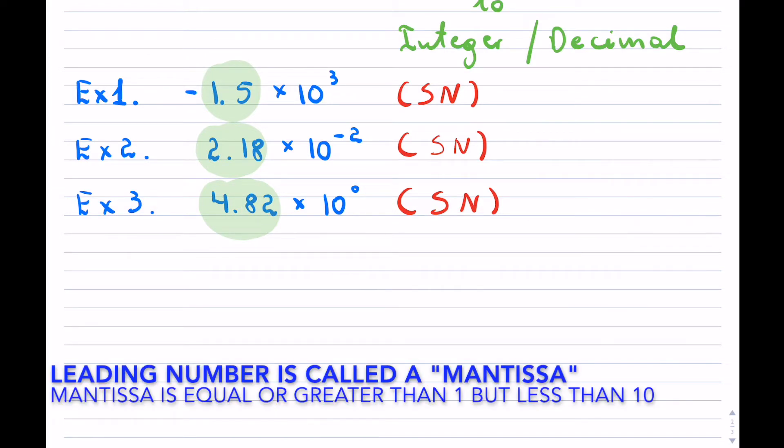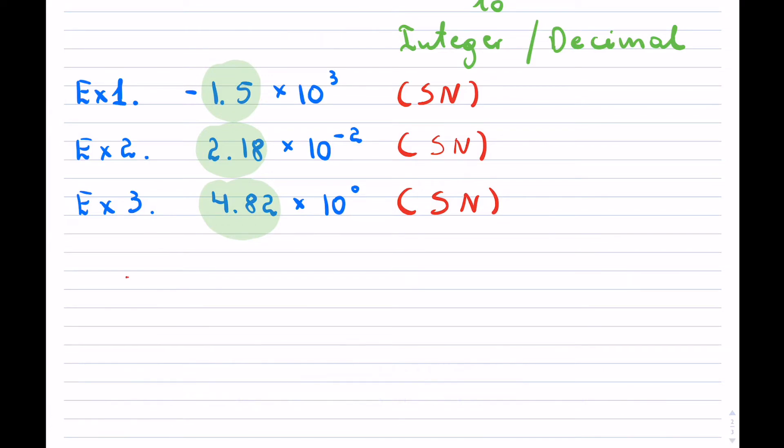Okay, so let's try to convert them back into a decimal or an integer. So the first example, negative 1.5, we can convert to scientific notation by utilizing simply the powers of 10.